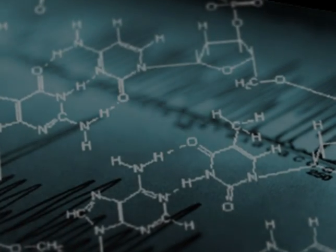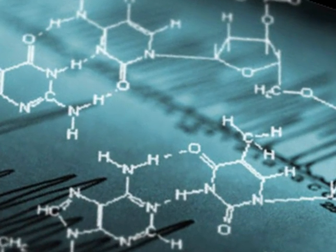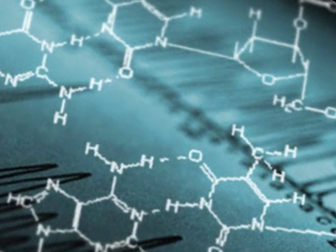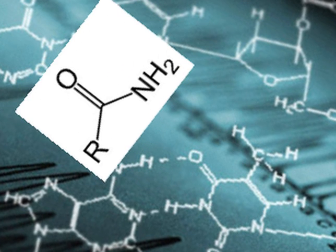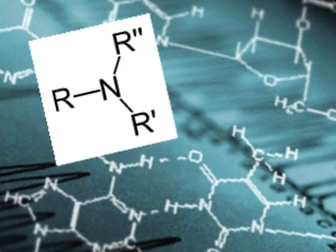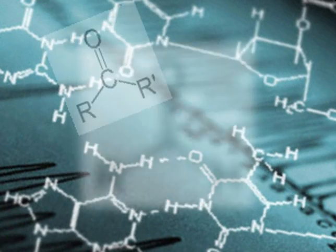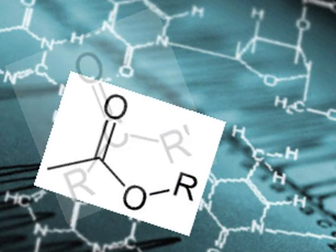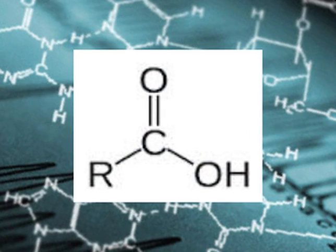Functional groups are groups of atoms found within molecules that are involved in the chemical reaction characteristics of these molecules. Some good examples of these functional groups are amides, amine, aldehyde, ketones, esters, and alcohols, just to name a few.